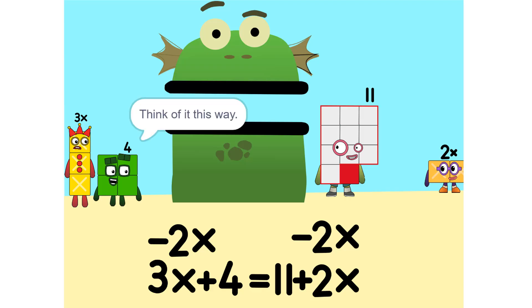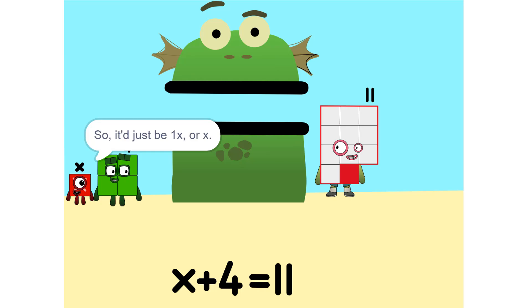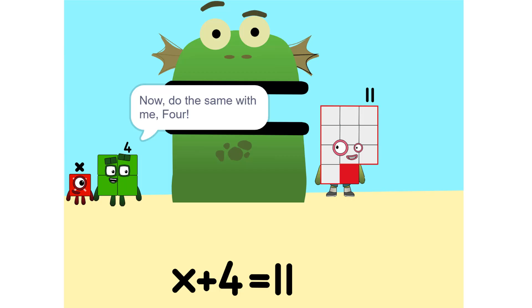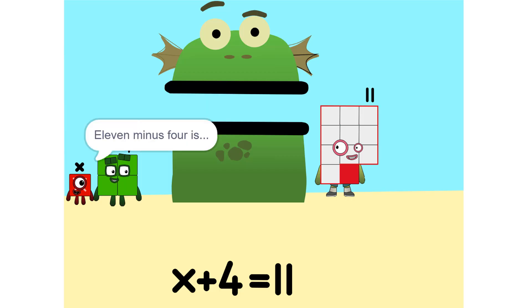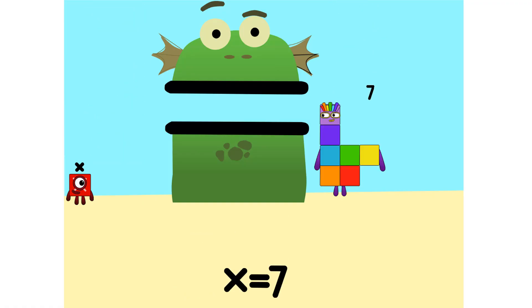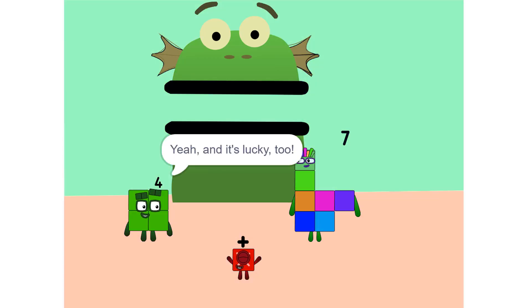Why? Think of it this way. You're subtracting 2X from each side. Oh. So it'd just be 1X or X. Correct. Now do the same with the 4. Okay, 11 minus 4 is 7. So now what do I do? What's there left to do? Oh. X equals 7 so I'm 7. Yeah. And it's lucky too. So now that you know your value, what do you wanna do?